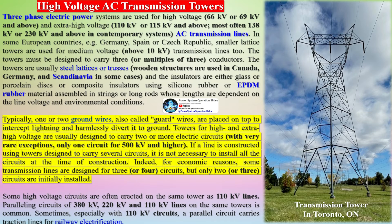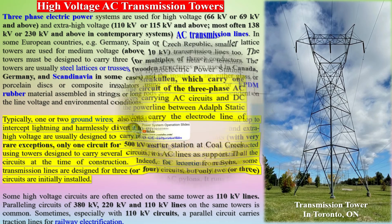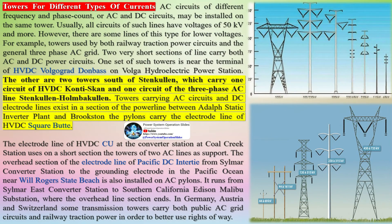Three-phase electric power systems are used for high-voltage (66 kV or 69 kV and above) and extra-high-voltage (110 kV or 115 kV and above, most often 138 kV or 230 kV and above) AC transmission lines. In some European countries such as Germany, Spain, or Czech Republic, smaller lattice towers are also used for medium-voltage (above 10 kV) transmission lines. These towers must be designed to carry three or multiples of three conductors.